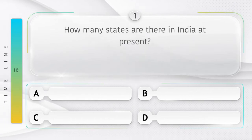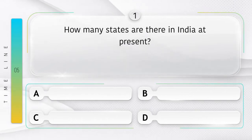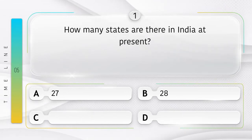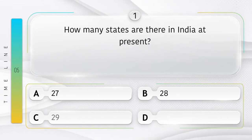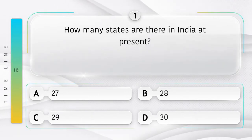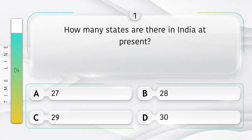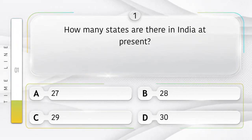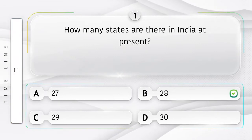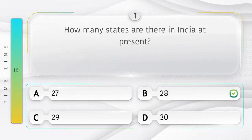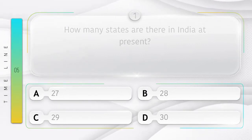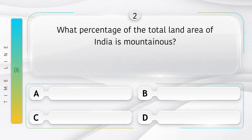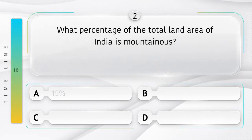How many states are there in India at present? Option A: 27, B: 28, C: 29, D: 30. Answer is option B: 28.